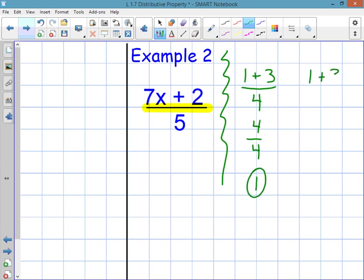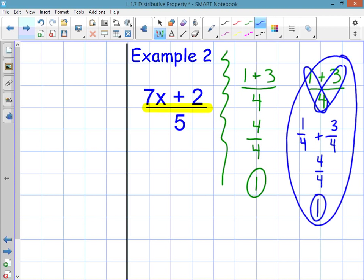But you could also take 1 plus 3 over 4 and separate the top two numbers and write it over the same denominator, like this: 1 over 4 plus 3 over 4. And 1 fourth plus 3 fourths is 4 fourths, and 4 fourths is 1. Same answer. Just like the first example I showed you, this is more complicated and you wouldn't do a problem like this in this way. But when I give you an expression that has a letter in it, like x, then you have to do it this way. So in this example, example 2, 7x plus 2 over 5, all I'm really asking you to do is separate the top two terms and write them each over the same bottom denominator. So the answer is 7x over 5 plus 2 over 5. And that's it.